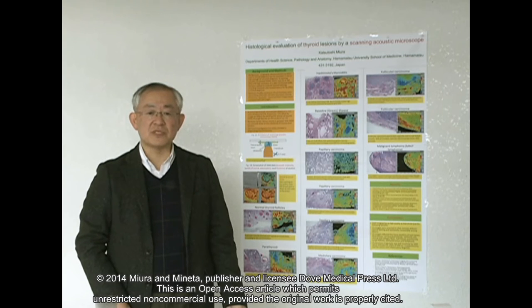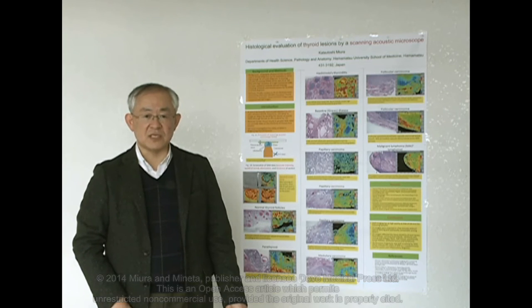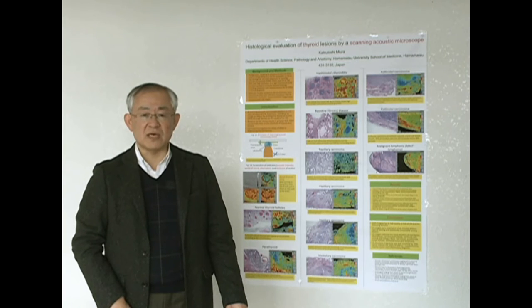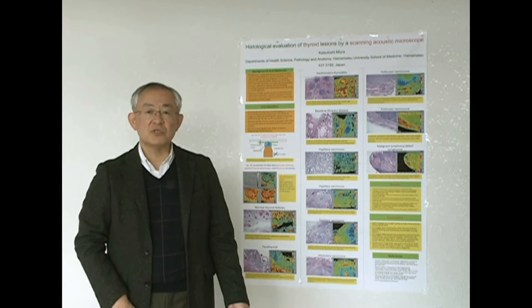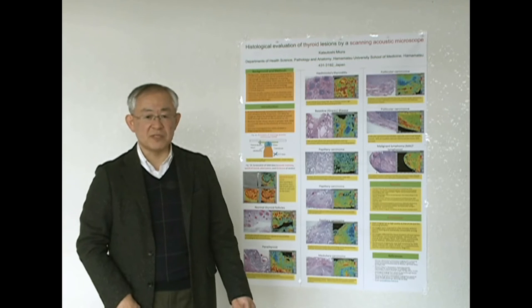A SAM uses ultrasound to image an object by plotting the speed of sound through tissues on screen. Because hard tissues result in greater speed of sound, SAM can provide data on tissue elasticity. We have investigated the utility of SAM in evaluating thyroid regions. Most audiences are not familiar with this microscope, so I have demonstrated the principle of this observation.